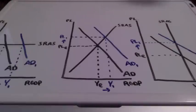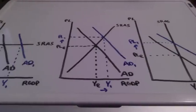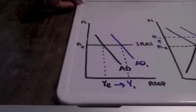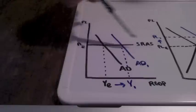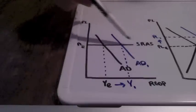In this video lesson we're going to take a look at aggregate supply elasticities. With our first graph we have a perfectly elastic short run aggregate supply curve.